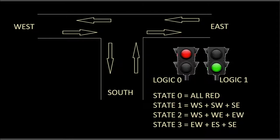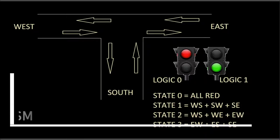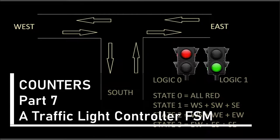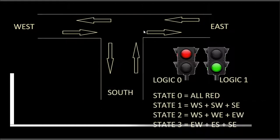Hello and welcome to this video. In this video we want to talk about state machines. I want to present one example of a state machine, and specifically this is the example of working with a T-junction traffic light controller.